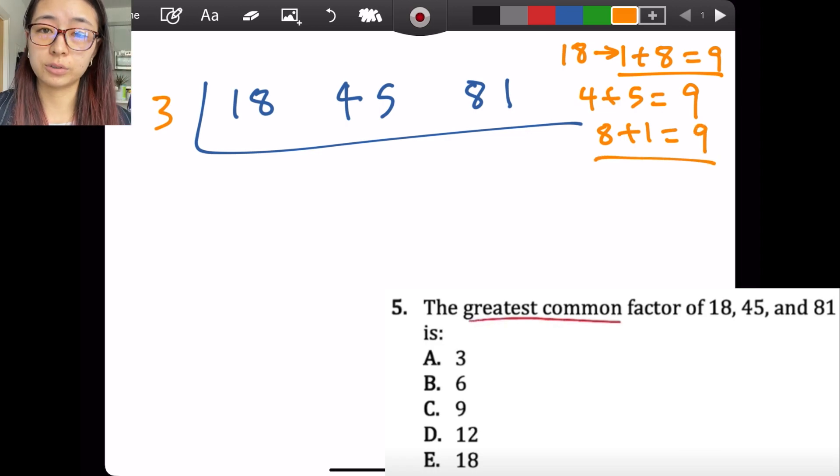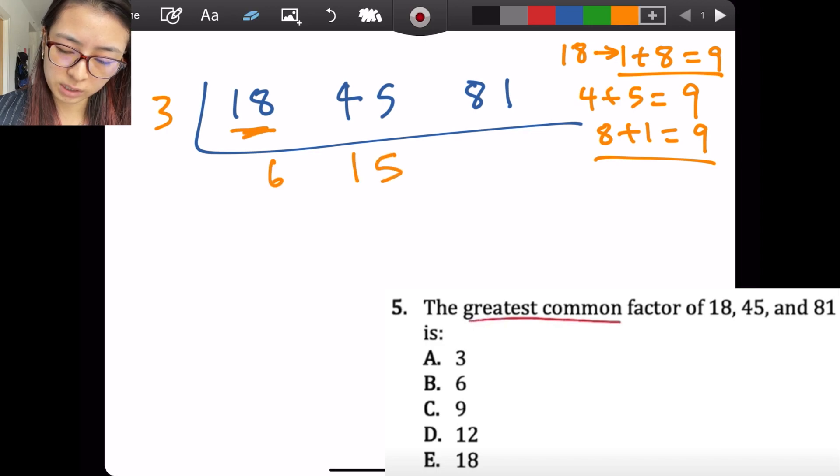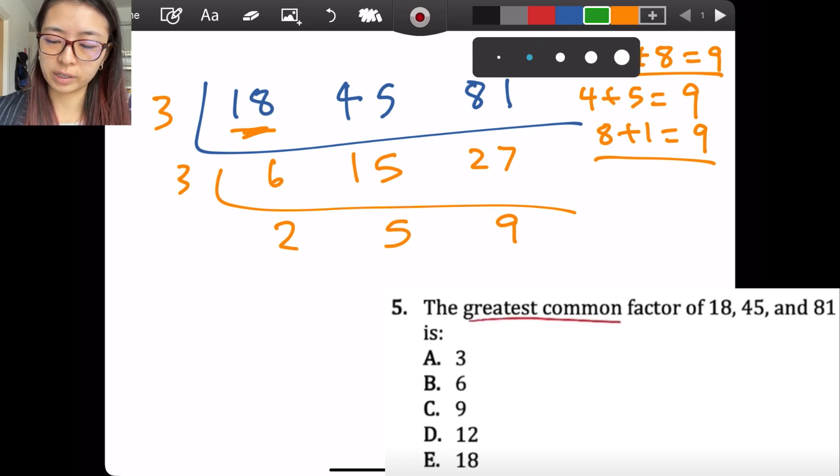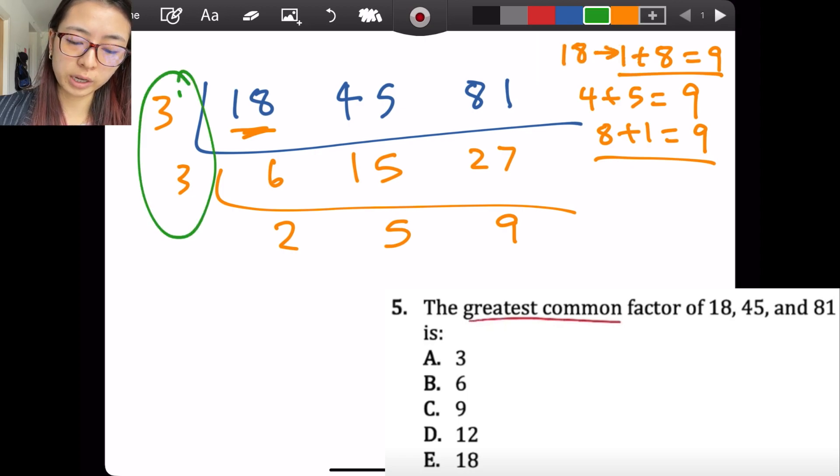All we do here is do 18 divided by 3 is 6, 45 is 15, 81 is 27. And we can divide by 3 again, so we get 2, 5, 9. There are no more common factors between them, so the greatest common factor between 18, 45, and 81 is just the product of the numbers on the side. So it's 3 times 3, which means the answer is 9.